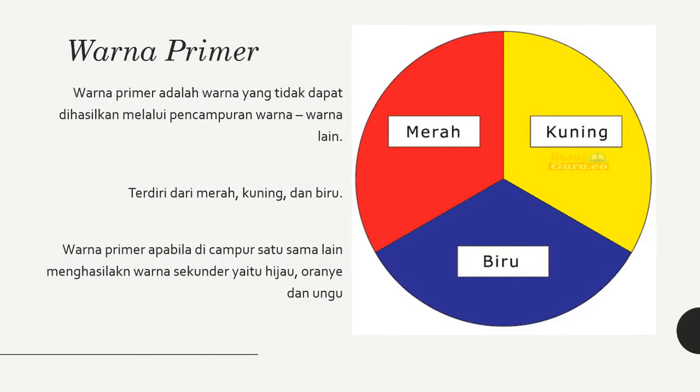Warna Primer. Warna primer merupakan warna dasar atau warna pokok yang tidak dapat dihasilkan atas pencampuran warna apapun. Warna primer tersusun atas warna merah, biru, dan kuning. Bila warna-warna primer ini dicampur satu sama lain dengan perbandingan yang sama, akan menghasilkan warna sekunder, yaitu hijau, oranye, dan ungu.